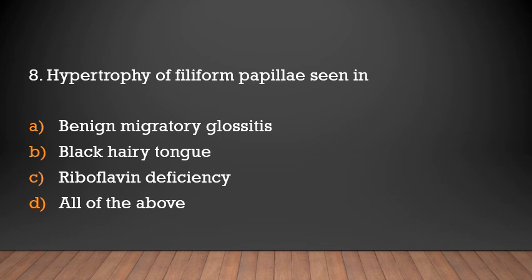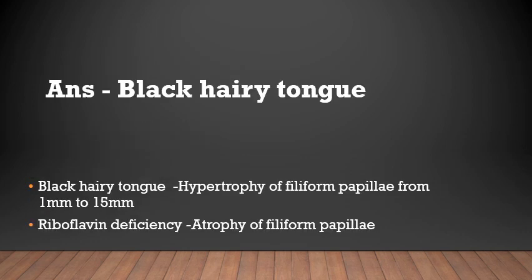Hypertrophy of filiform papillae is associated with black hairy tongue. In black hairy tongue, there is hypertrophy of filiform papillae from 1 mm to 15 mm. Atrophy of filiform papillae is associated with riboflavin deficiency.